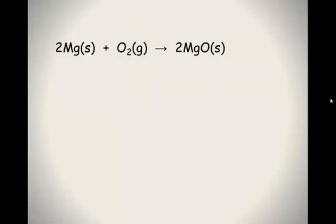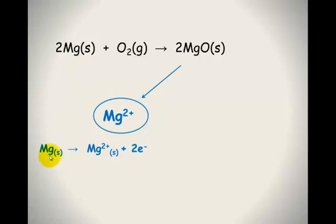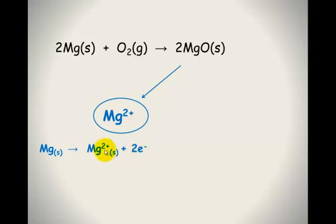Let's look at the magnesium and oxygen example again to show the half equations involved. Looking at the magnesium half equation, magnesium solid becomes Mg²⁺ plus two electrons. The charges on both sides need to be equal: here we have a neutral charge, and here we have 2+. What balances out the 2+ is two electrons — that's why it became 2+, because it lost two electrons. Two positive plus two negative gives you the neutral charge you started with.